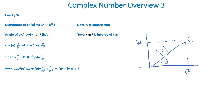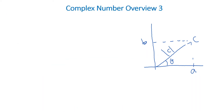Then we add both sides of the two equations. We get cosine theta squared plus sine theta squared is equal to a squared divided by c squared plus b squared divided by c squared. We know from trig that cosine theta squared plus sine theta squared is always equal to one.